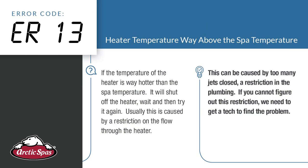ER13 — heater temperature way above spa temperature. If the temperature of the heater is way hotter than the spa temperature, it will shut off the heater and wait, then try again. Usually this is caused by a restriction on the flow through the heater, which can be caused by too many jets closed or a restriction in the plumbing. If you cannot figure out this restriction, you'll need to have a tech come check it out.